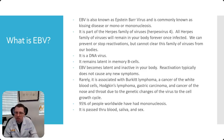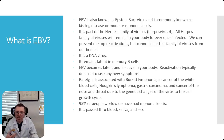What is Epstein-Barr virus? That's EBV, also known as kissing disease, mono, or mononucleosis. It is part of the herpes family of viruses — number four. The herpes family of viruses will remain in your body forever once infected. You can't get rid of it, you can't get it out of your system, but we can't prevent reactivations. All the herpes viruses are DNA viruses. They remain latent — Epstein-Barr virus specifically in memory B cells.